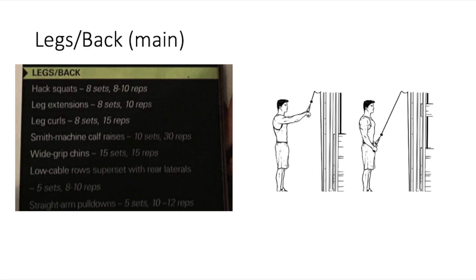Then low cable rows superset with rear lateral raises, does five sets of eight to ten reps, and then finishes off with the straight arm pulldowns, five sets of 10 to 12 reps. Now if you don't know what straight arm pulldowns are, there is a picture on the right right there. Those are straight arm pulldowns, they're a really good lat workout and they help develop the serratus a lot too.